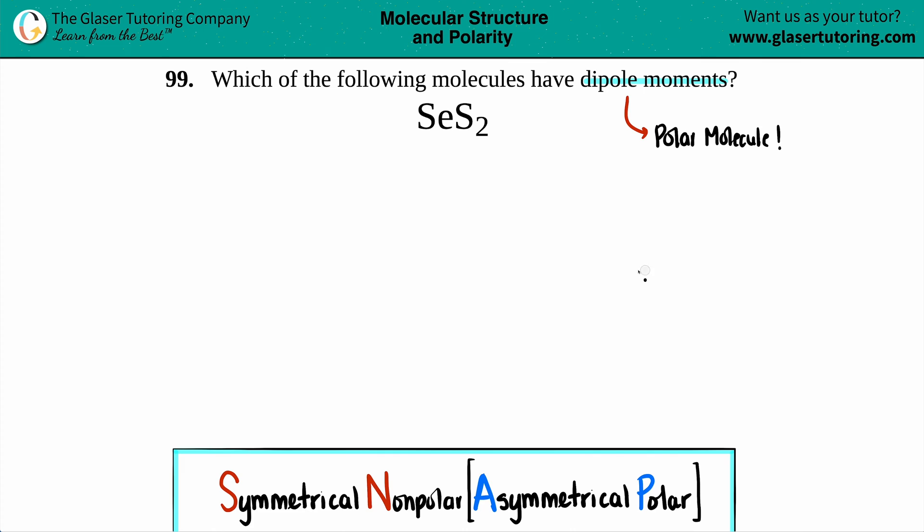Because everything is nice and even, and there's no pull of electrons. So right off the bat, if you have a dipole moment, that asymmetrical distribution, you got to be polar.